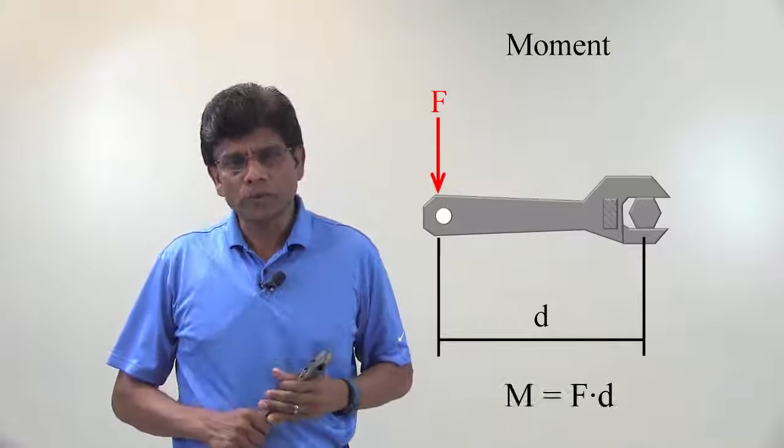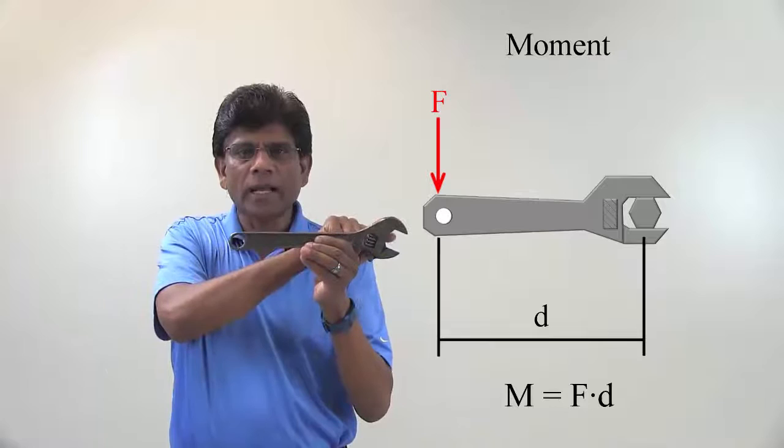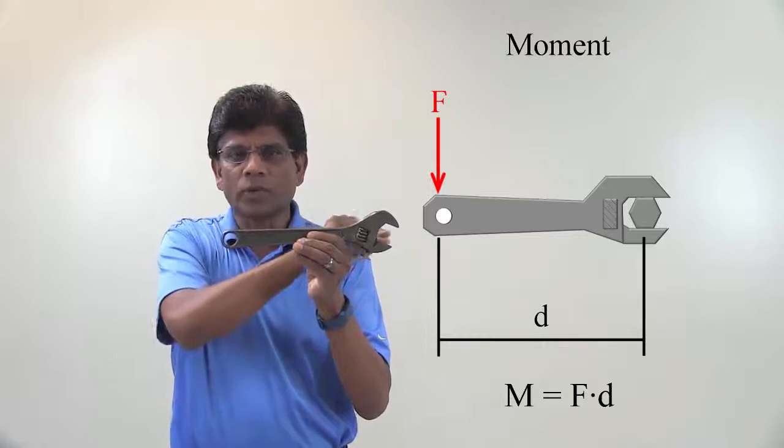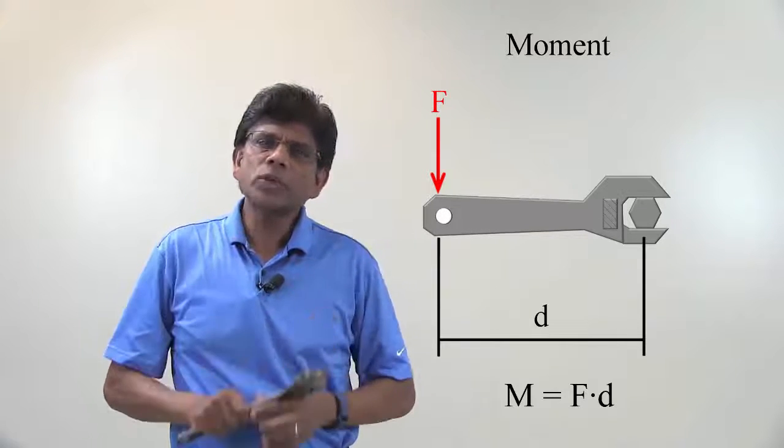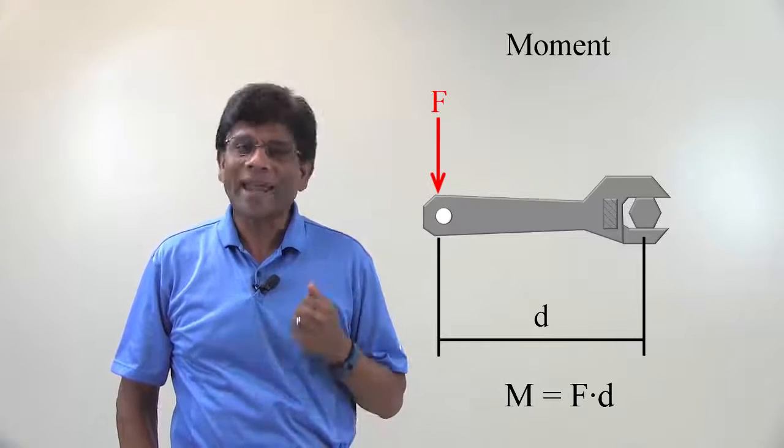The magnitude of the moment is equal to force times the perpendicular distance from the line of action of the force to the center of the rotation. Hence, the unit for moment is going to involve the unit for force and distance.